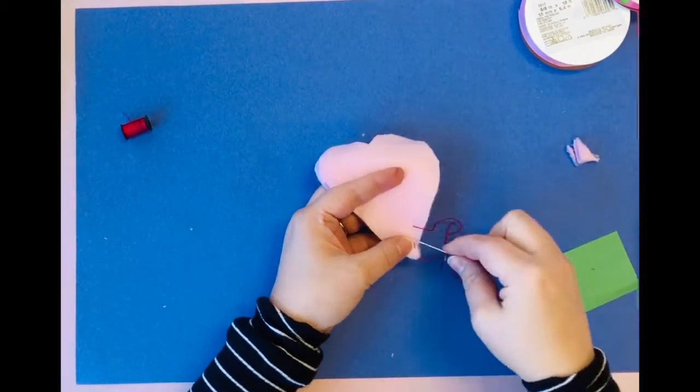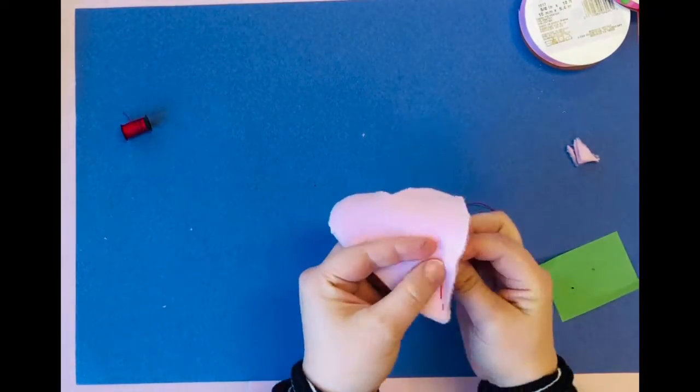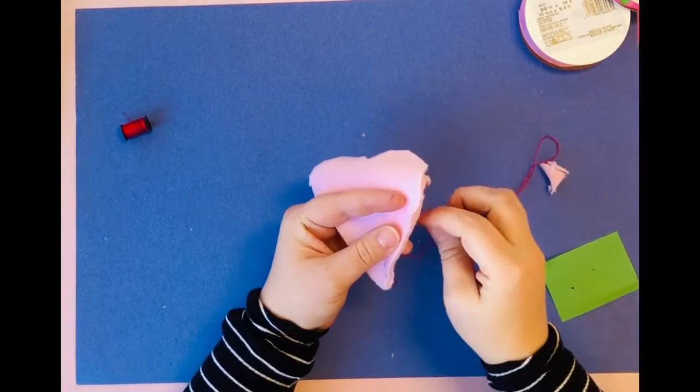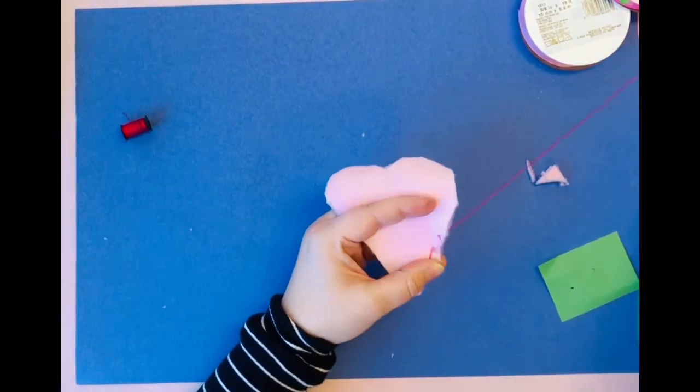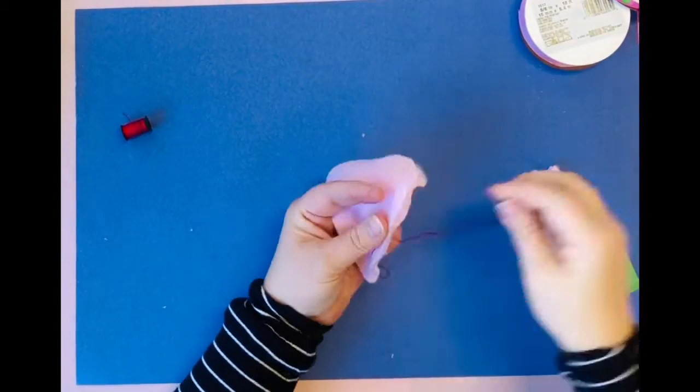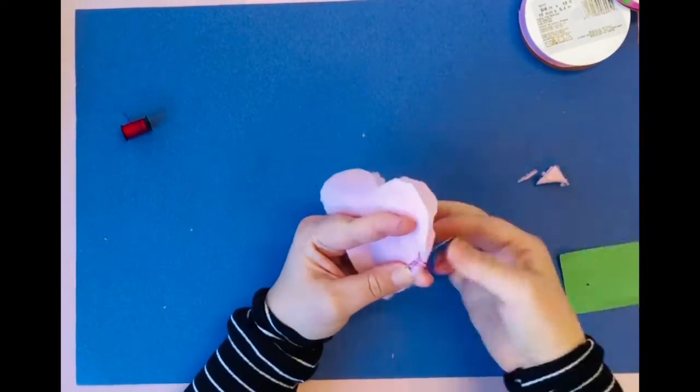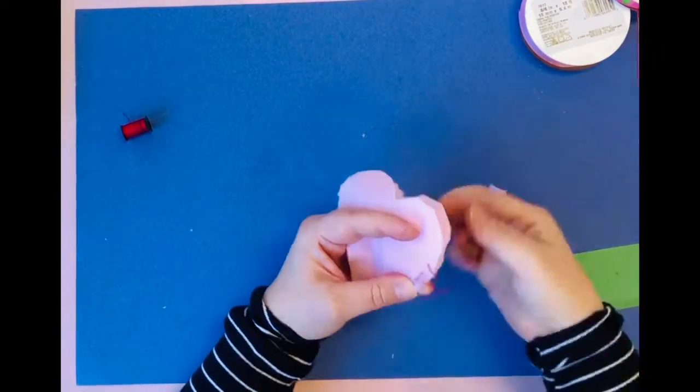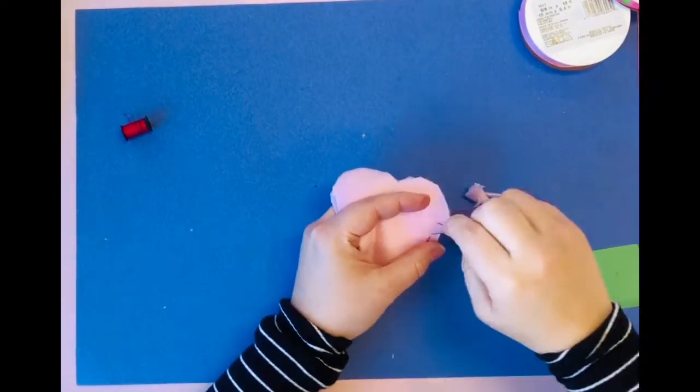So I'm doing what's called a back stitch. You can slow the video down or YouTube different types of stitching that might work best for you. I like this stitch because the front of it looks really good.